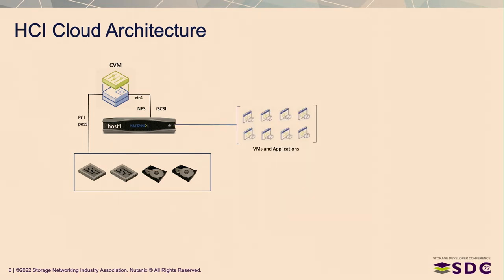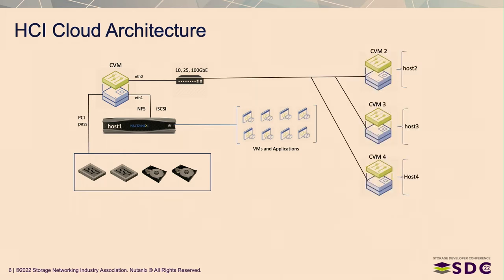Once that's set up, you can run VMs and applications. But with only one host, we don't use RAID to protect data. What if a disk fails, or we lose a host, or the CVM panics? The CVM has another virtual NIC connecting to the outside world through a 10, 25, or 100 gig ethernet switch. We bring up other nodes in the cluster via ethernet — no backplane. Each host has its own CVM, and the disks connected to each host are included in one centralized file system that the cluster accesses.